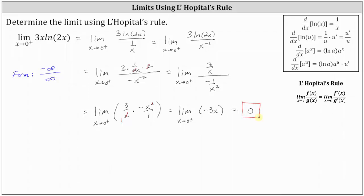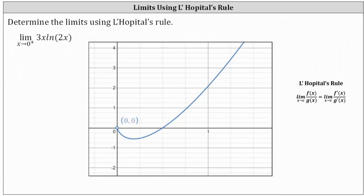Let's verify this graphically. Here we have the graph of y equals 3x natural log 2x, and we can see as we approach x equals 0 from the right, we are approaching the y value of 0, verifying the limit. I hope you found this helpful.